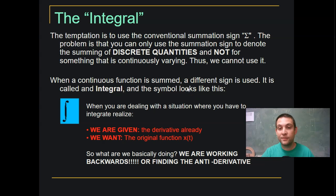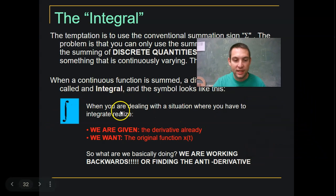The temptation is to use the conventional summation sign capital sigma. The problem is you can only use the summation sign to denote the summing of discrete quantities and not for something that is continuously changing. So we can't use it. When a continuous function is summed, a different sign is used, it's called an integral. And the symbol looks like this big long stretched out squiggly s. When you're dealing with a situation where you have to integrate,